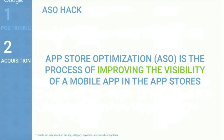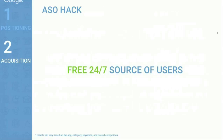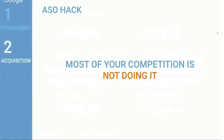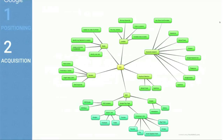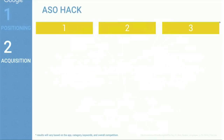Another great idea is App Store Optimization, or ASO — the process of improving the visibility of a mobile app in the app stores so that when people search for certain keywords, your app appears high in search results. The benefits: it's absolutely free, it's a 24/7 source of organic installs, and many apps still aren't doing it, so you can stand out and beat competition simply by focusing on ASO.